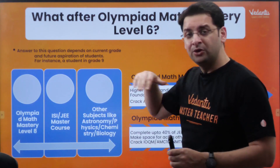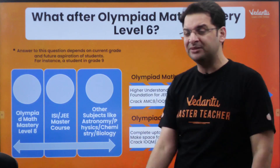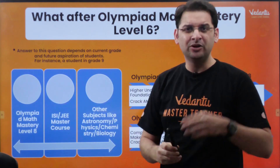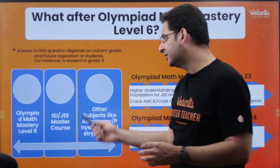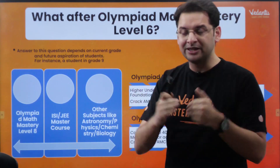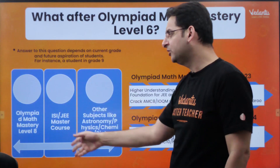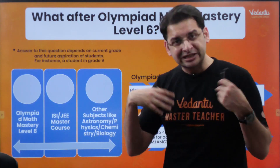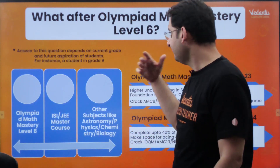After Level 6, there are a lot of other options depending on your interest. If you want to go deep into mathematics, there are Level 8 and Level 9 programs with restricted entries depending on your IOQM scores. Otherwise, you can always go for the ISI/JEE master course which we are launching this year for grade 10th and 11th students, covering ISI, IOQM, and everything in between. You can also explore other subjects like astronomy, physics, chemistry, and biology after Level 7.